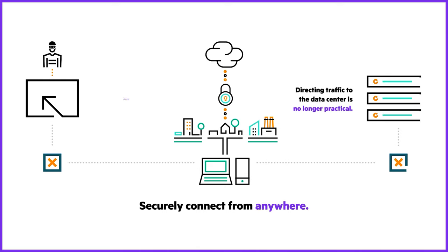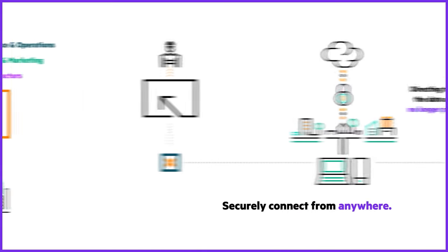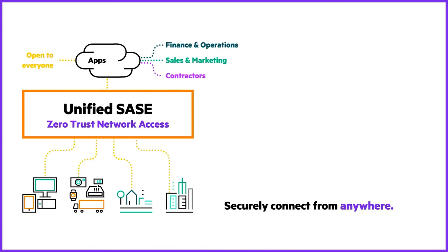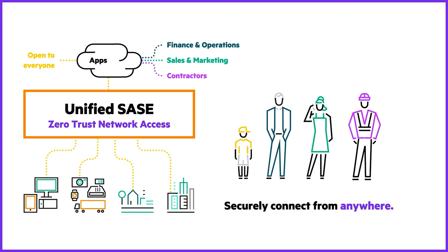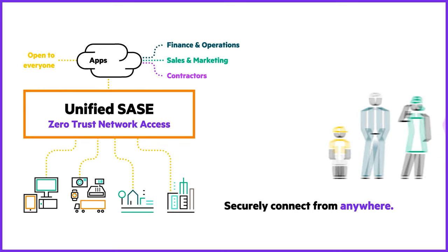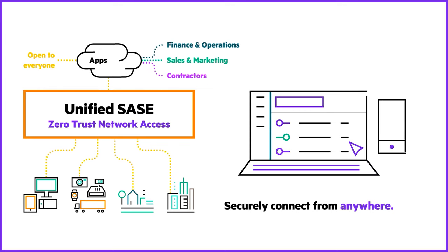Since most applications now reside in the cloud, directing application traffic to the data center is no longer practical. Zero Trust Network Access, or ZTNA, offers least privilege access principles with granular access controls at the application level based on user identity. More flexible and secure than traditional VPNs, it makes it easy to onboard third-party users with agent and agentless ZTNA.